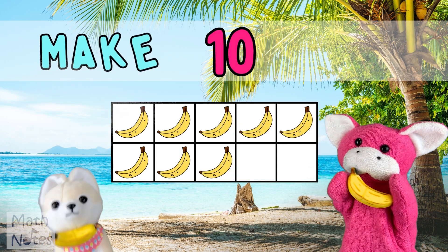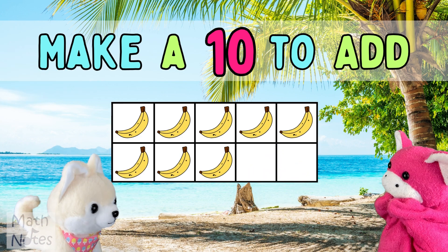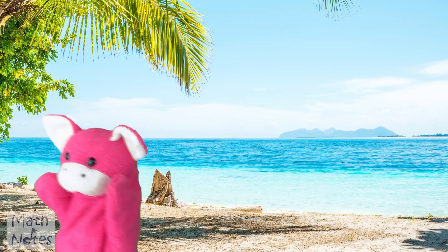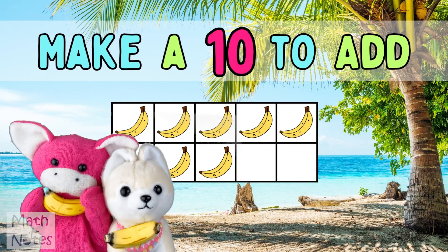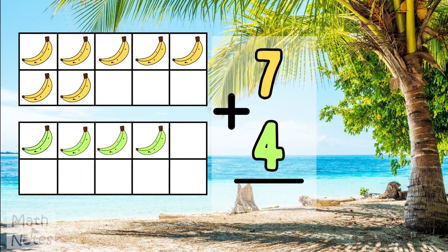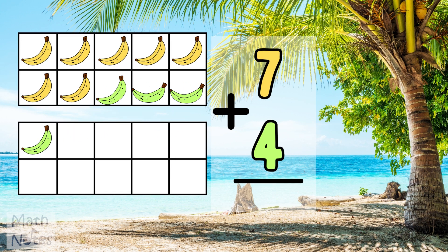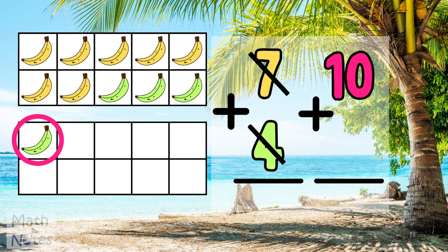You gotta make a ten to add, cause it's easier to add to a ten. You give three to the seven and then you make a ten. And then you add what's left to the ten.